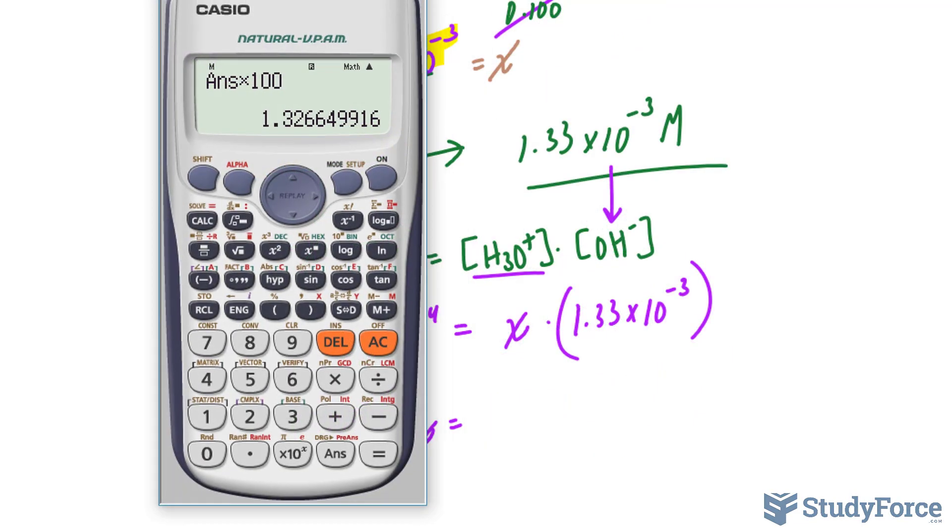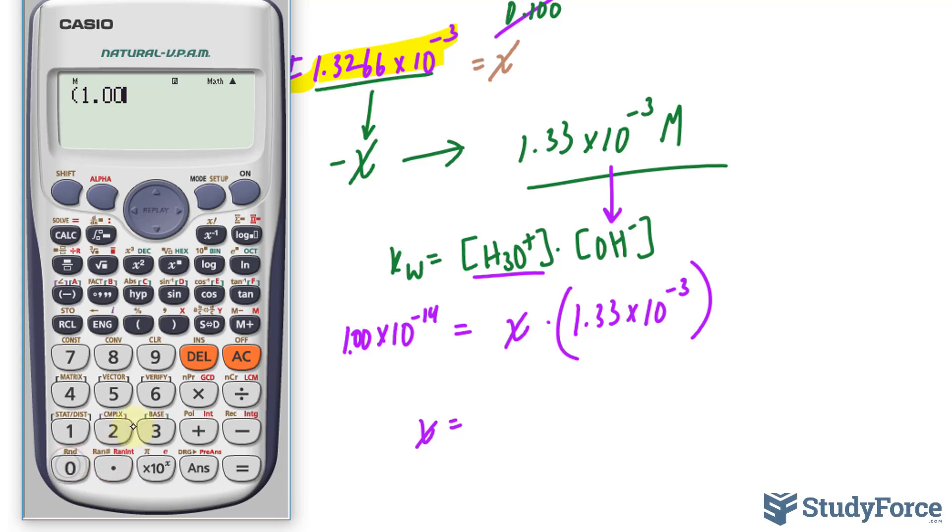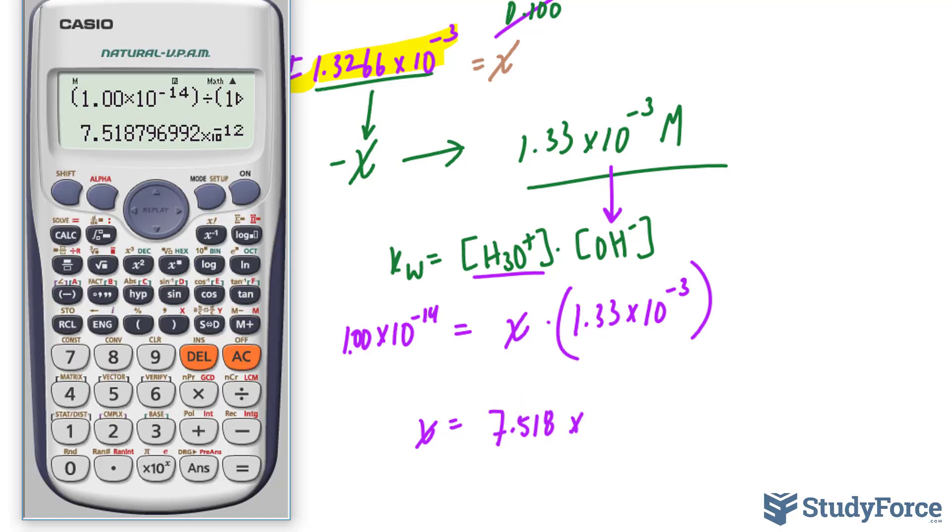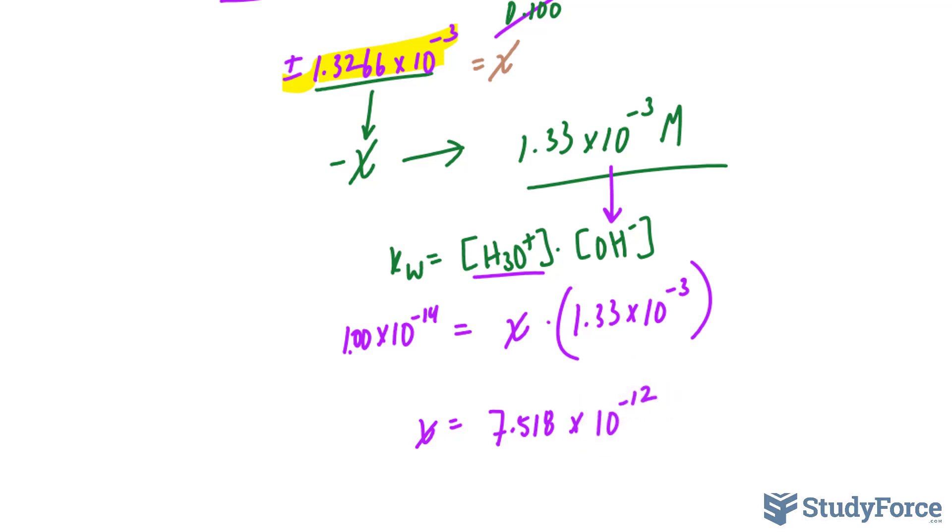That's equal to what we're looking for times 1.33 times 10 to the power of negative 3. Let's go ahead and solve for X. So dividing 1.00 times 10 raised to the power of negative 14 by 1.33 times 10 raised to the power of negative 3. That gives us a hydronium concentration of 7.518 times 10 raised to the power of negative 12. And we would expect that since NH3 is a base. You would expect that its concentration would be really small. And we need this to three significant figures, so we'll write this down as 7.52.